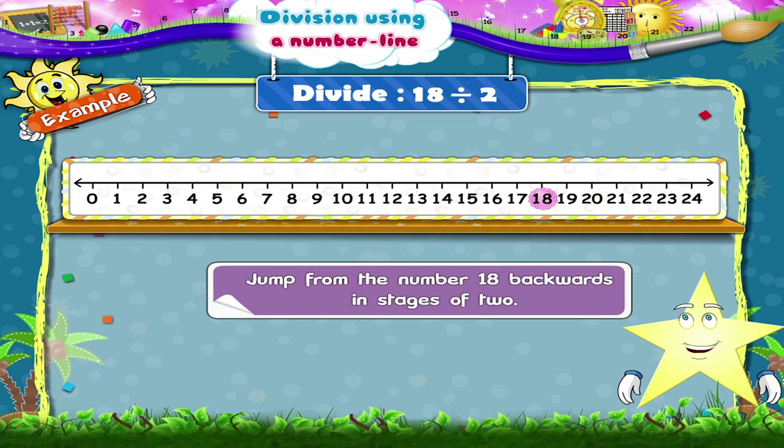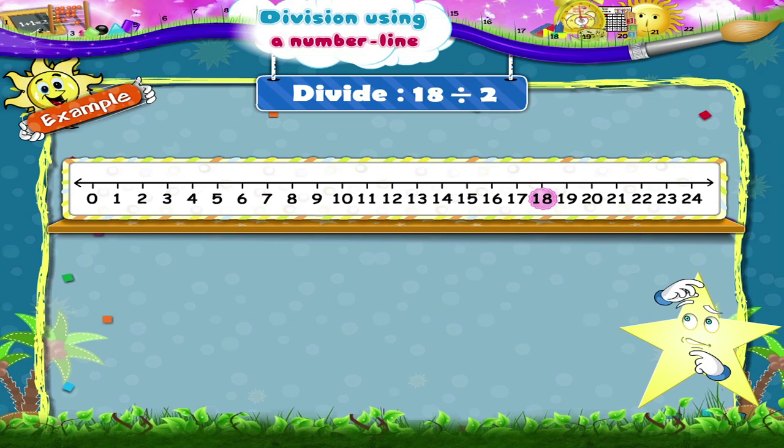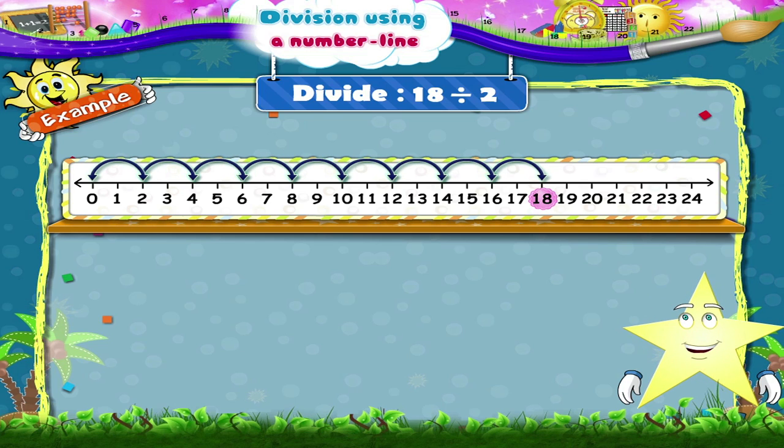We have to jump from the number 18 backwards in stages of 2. In how many jumps do we reach the number 0? Yes, 9. So, 18 divided by 2 is equal to 9.